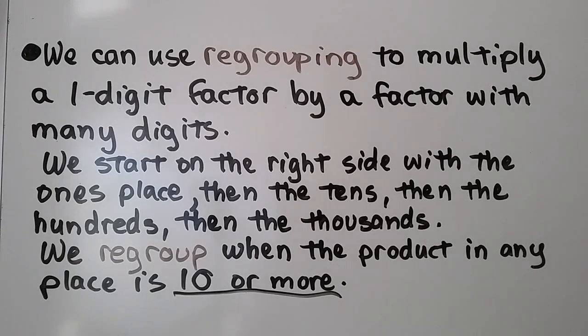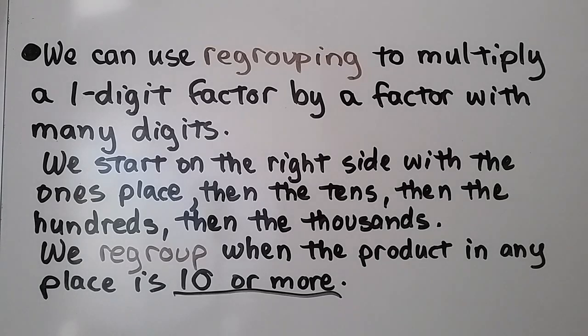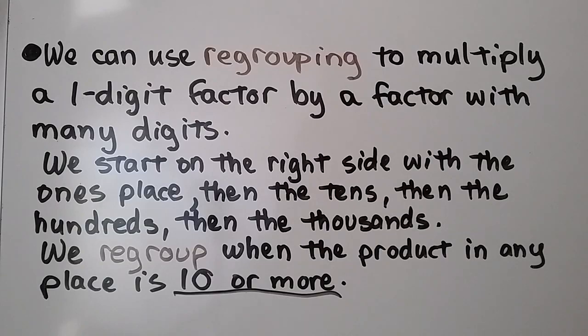We start on the right side with the ones place, then the tens, then the hundreds, then the thousands. We regroup when the product in any place is 10 or more.